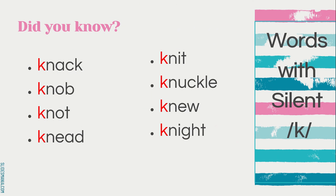Now let us look at more examples with silent K. We have the words: kneck, knop, knot, knee, knuckle, kneel, and knight. As you can see, there is letter K in every word here. However, they are silent. We don't say 'kkneck', we say 'neck'; we don't say 'kkneel', we say 'kneel'.